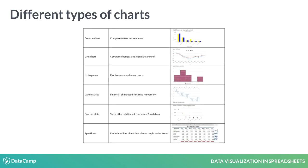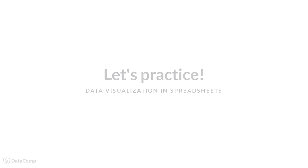One of the main assets of spreadsheets is their ability to produce charts to plot statistical data. Column and line charts are used for comparison. Histograms plot frequency. Candlesticks show price movements. Scatters show relationships. And sparkline charts show single trends within a cell. We will look at all of these chart types in this course. But first, let's practice modifying a simple completed dashboard to understand how they work, click and the features.